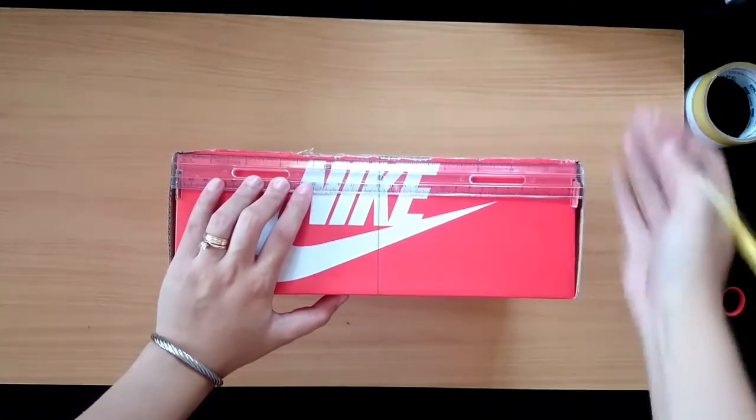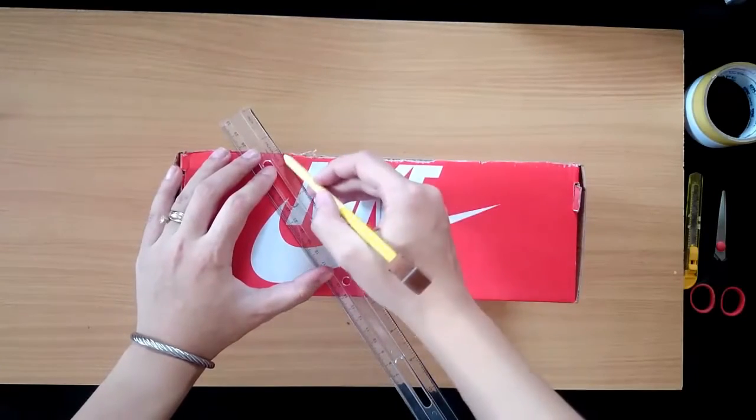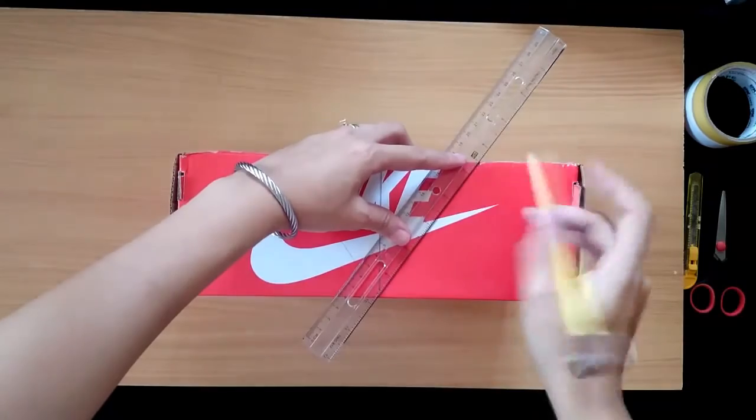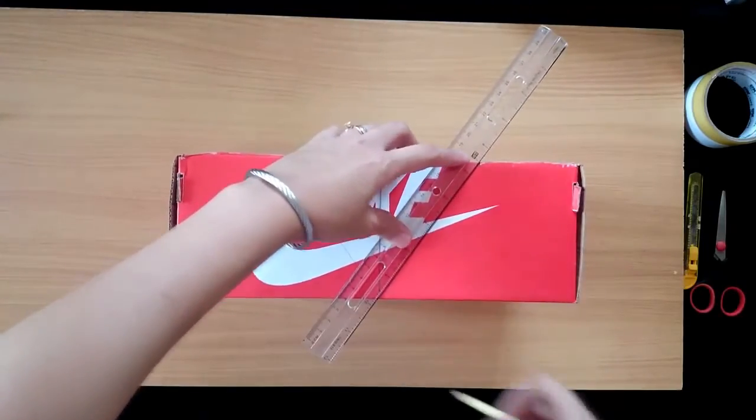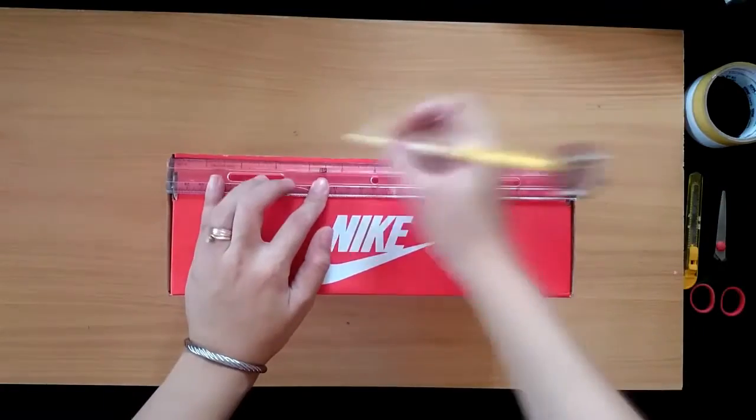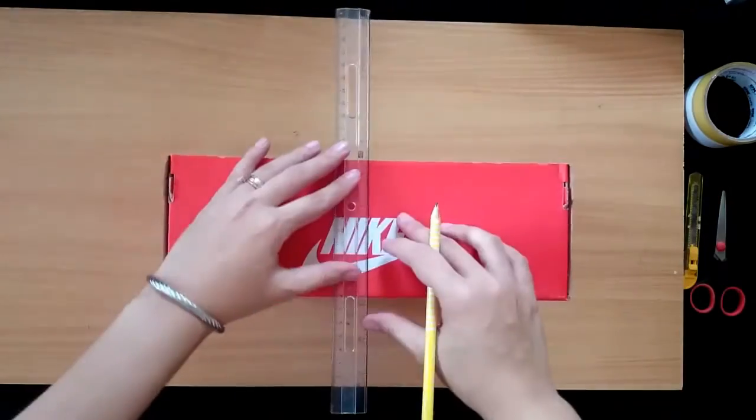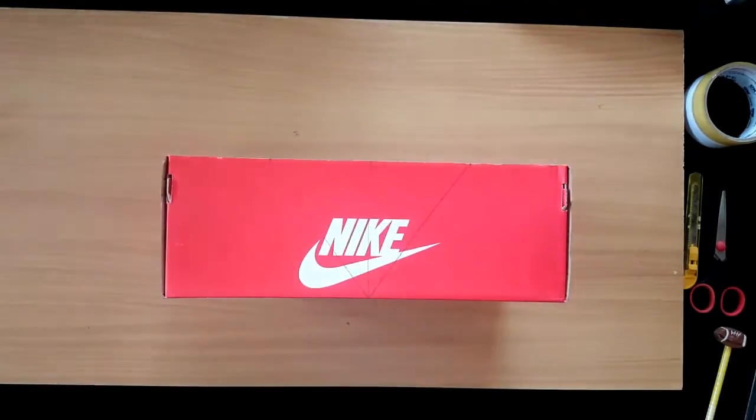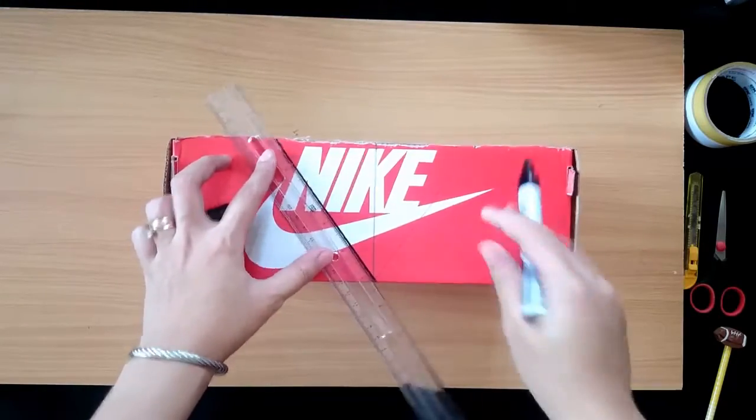Mark both sides and connect the dots to create a triangle. Do the same on the other side. I used a marker so you can easily see the lines.